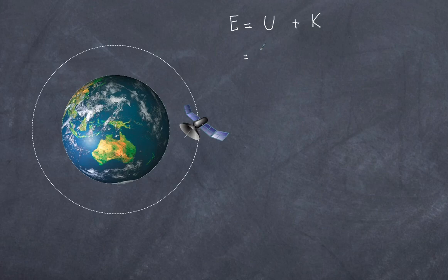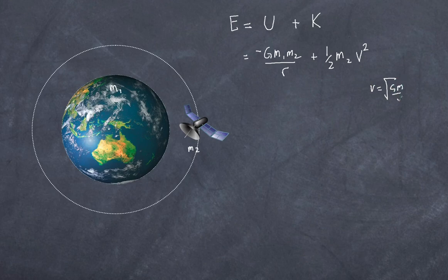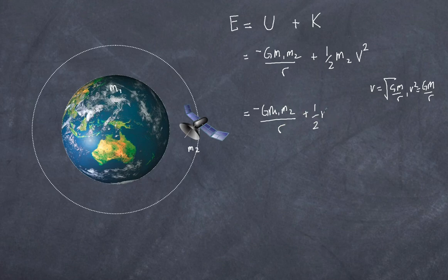The gravitational potential energy equals negative Gm1m2 over r, where m1 is the Earth's mass and m2 is the satellite's mass. The kinetic energy is simply one-half m2 times v squared. To eliminate v as a variable, recall that v equals the square root of GM over r, so v squared equals Gm1m2 over r. Substituting, the kinetic energy becomes one-half m2 times Gm1 over r.